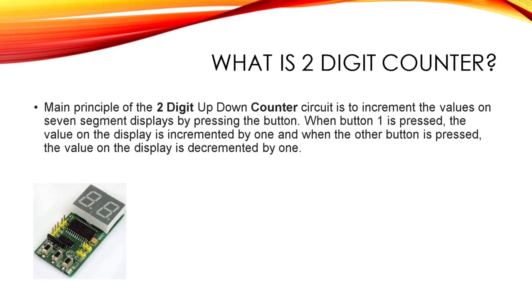So first of all, what is a two digit counter? The main principle of the two digit up down counter circuit is to increment the values on the seven segment displays by pressing the button which is up button or down button.